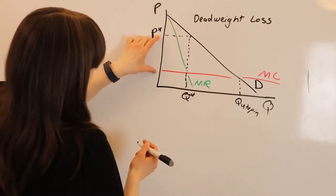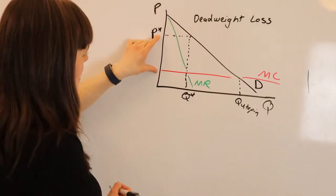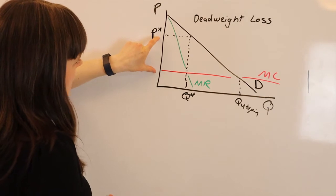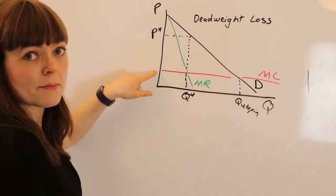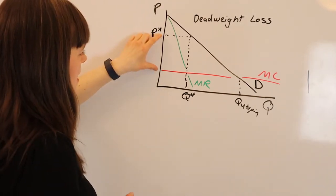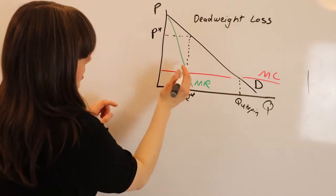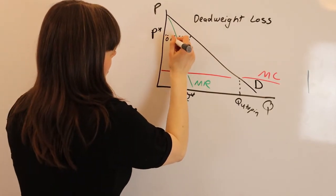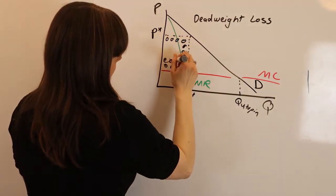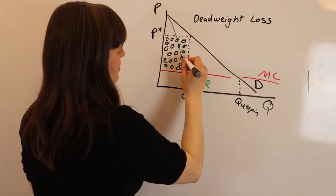We see that for every product the monopoly sells, they make a markup of this amount - the price minus the cost of production for that product. And they sell this number. So this area right here represents the producer surplus.